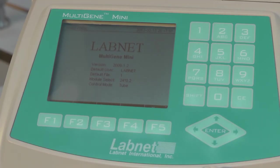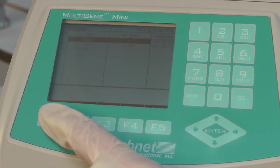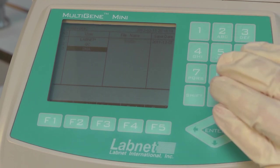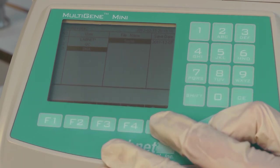You only need to set up a program for your PCR once. Once you've done that, you can simply select it and run it straight away. So again, under file, press F1. Use the arrow keys to select the file you want, and then just press run.